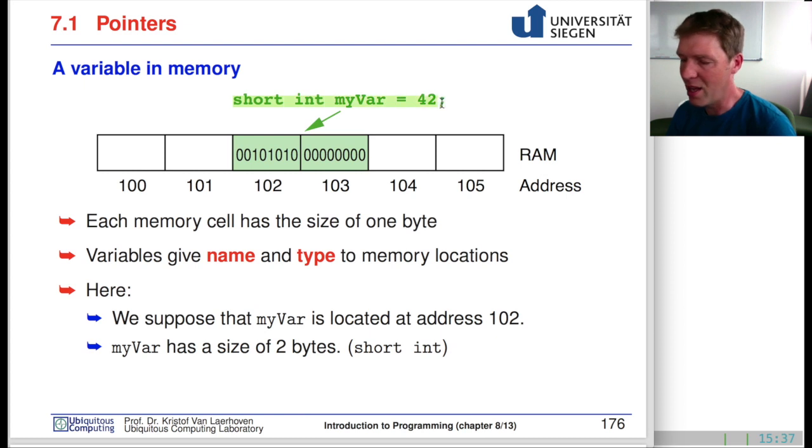When we initiated myVar as 42 as a short int, then in the background, somewhere in our memory, there is a memory address, for instance 102, where myVar starts, and there we can create the number 42 as a binary depiction.